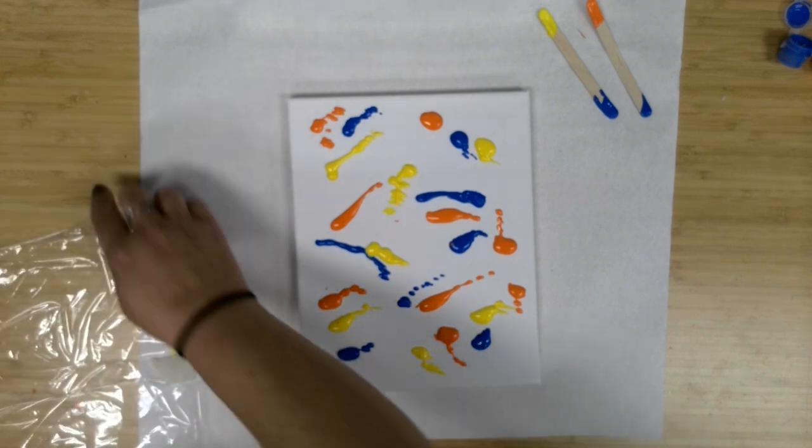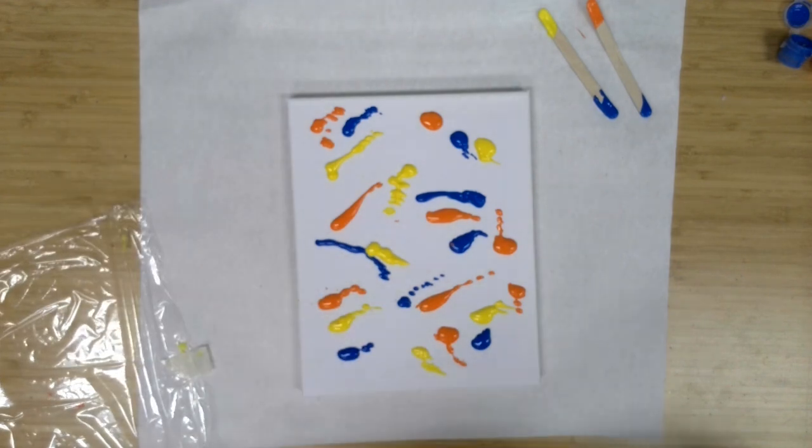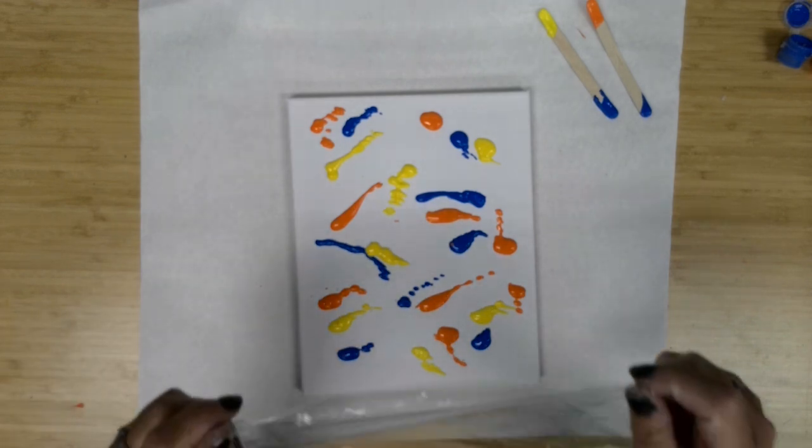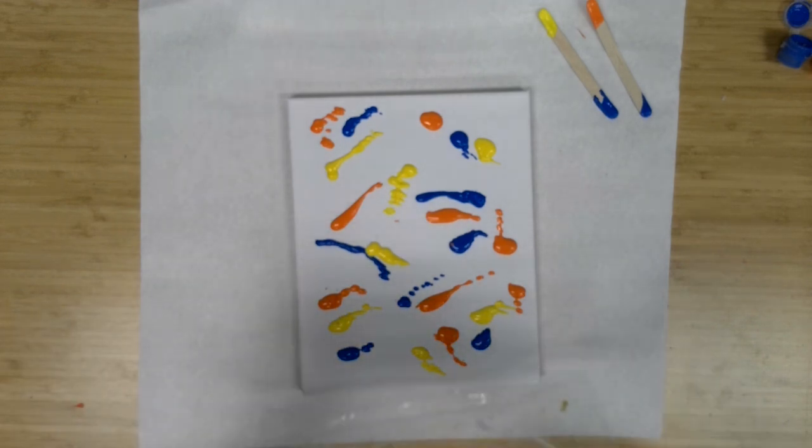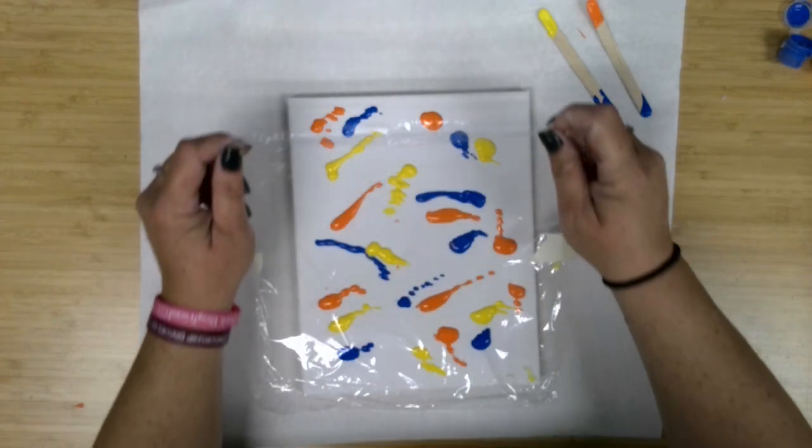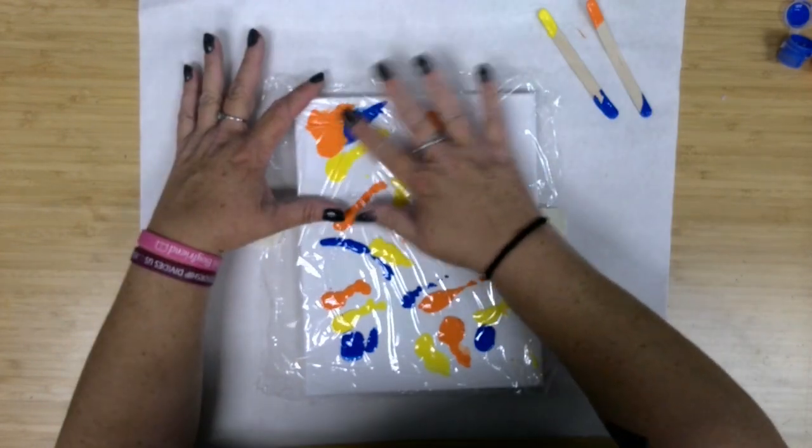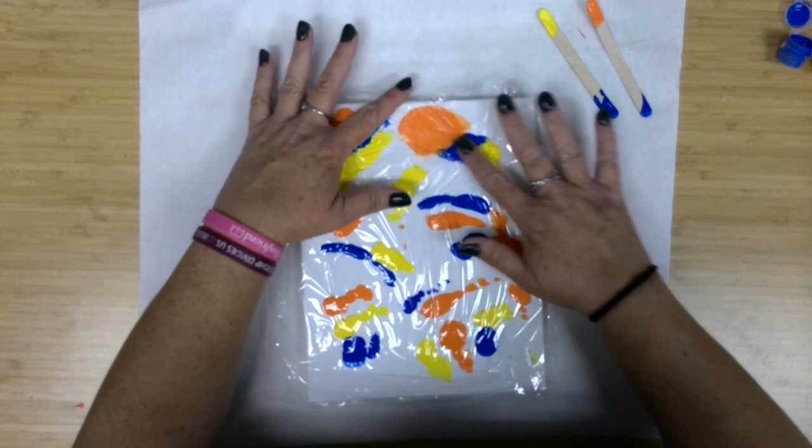And again, I'm not too worried about it crinkling up. Really because I'm going to be doing some of that. So I'm just bringing my cling wrap right over my canvas. Laying it down.